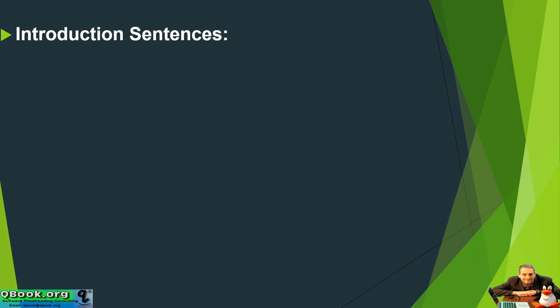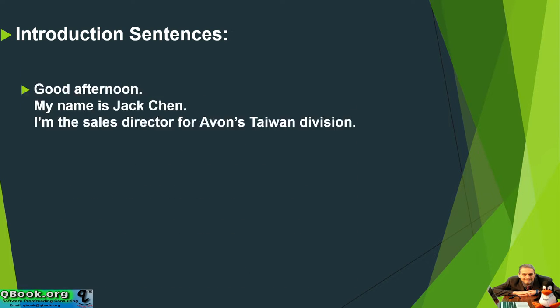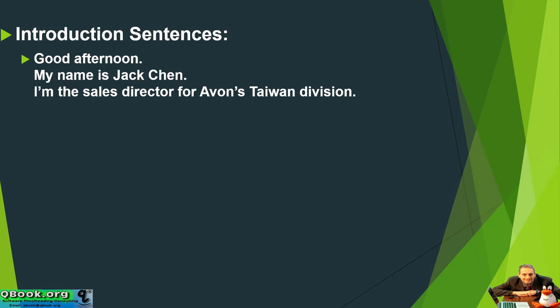Let's look at some introduction sentences that we could use. So for example, good afternoon. My name is Jack Chen. I am the sales director for Avon's Taiwan division. See, that's very straightforward, right? Very easy, I think, to understand. Very friendly and helps to introduce who you are and who you represent. It's a really great idea.